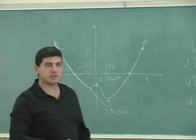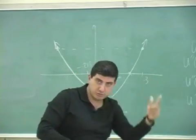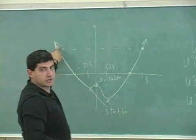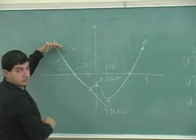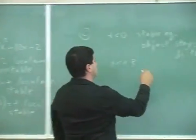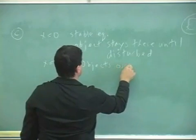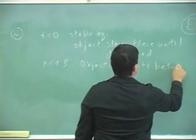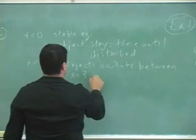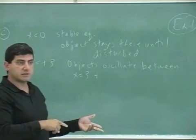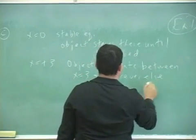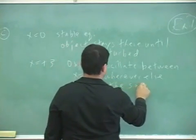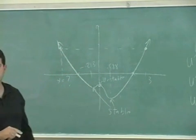So if the object is placed at x equals three, it would have enough potential energy to come down the hill, go all the way to wherever the potential energy is the same over here. So object would oscillate between x equals three and wherever else the potential energy is the same. So what would that equal? What would that x equal here? How would you find that other point?